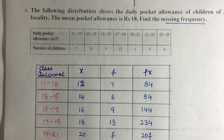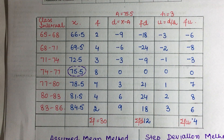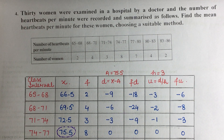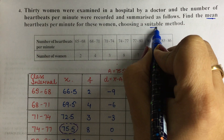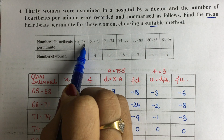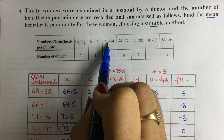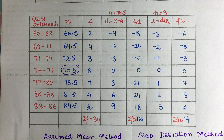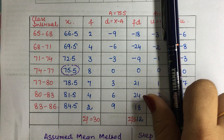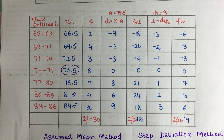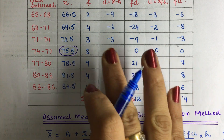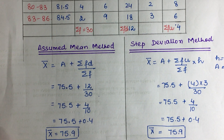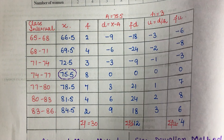Question 4: 30 women were examined in hospitals and the number of heartbeats per minute were recorded. We need to find the mean and state the suitable method. Check the data: the ending and starting points of intervals are the same (e.g., ending at 68, next starts at 68). This is similar to Question 2 — find x, find f, use assumed mean or step deviation, whichever you prefer.